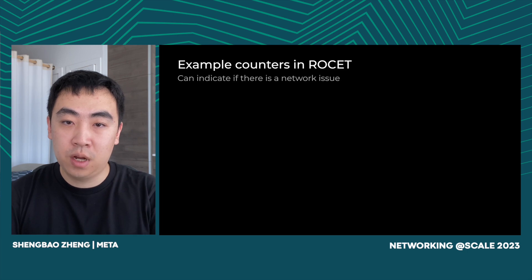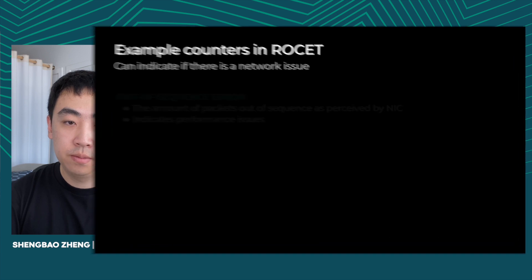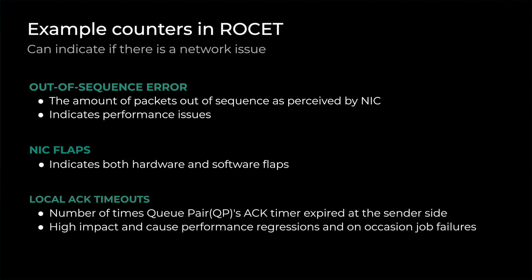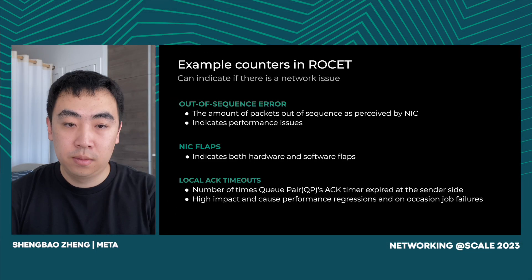Here are several example counters that ROCKIT uses to identify network issues. Out-of-sequence error measures the amount of packets out-of-sequence as perceived by the NIC; it indicates job performance issues. NIC flap is another important counter which indicates both hardware and software flaps. Local ACK timeout measures the number of times that the QP's ACK timer expired at the sender side. It has a high impact and usually causes performance regressions and on occasion job failures.